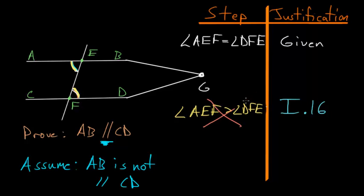So this can't be true, which means that our assumption can't be true. Or essentially, these two lines aren't going to meet. And like I said, we could assume that they met on the left hand side and use the exact same argument.